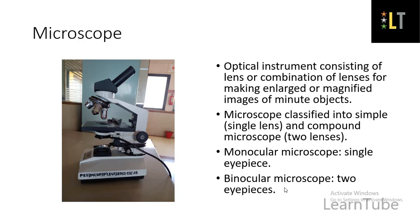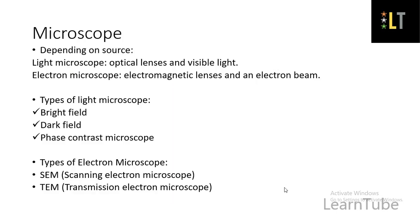The microscope can be classified into two types. One is the simple microscope, where we use a single lens, and the other is the compound microscope, where we use two lenses. Depending upon the eyepiece, it can be divided into monocular and binocular microscope. Monocular means single eyepiece and binocular includes two eyepieces.